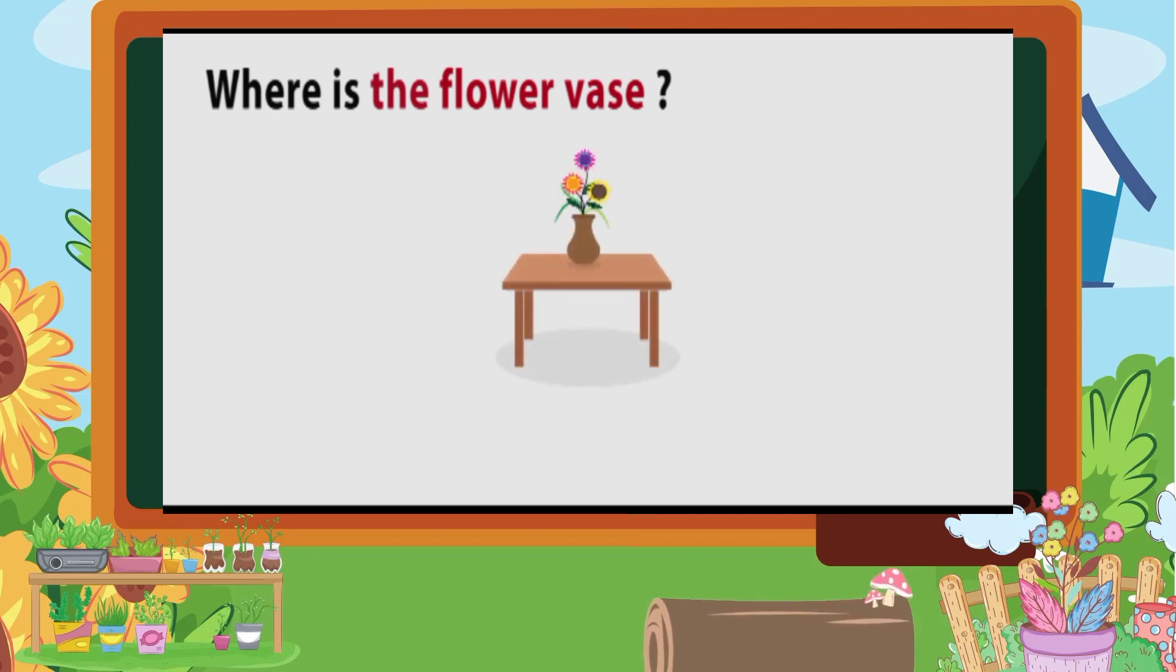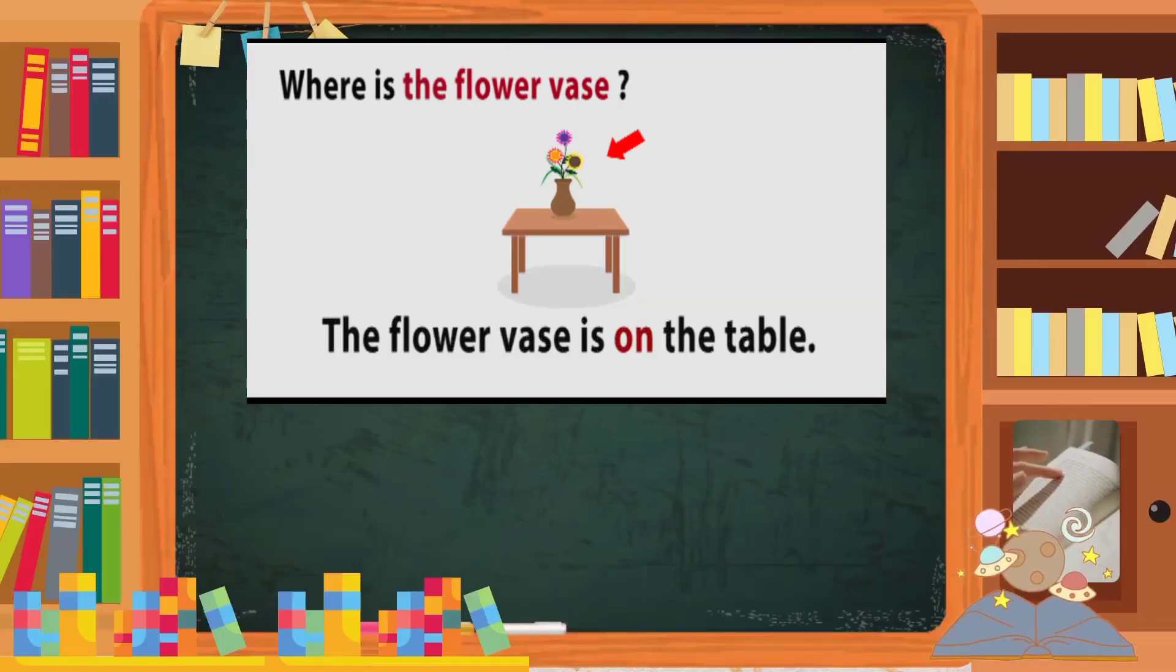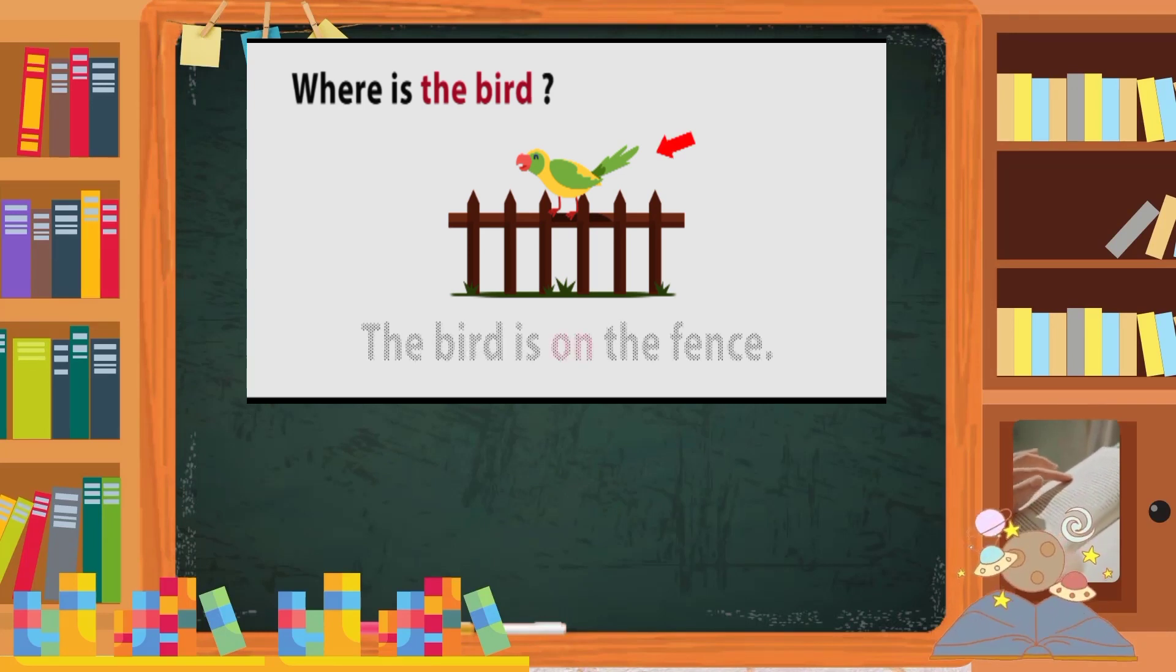Where is the flower vase? The flower vase is on the table. Where is the bird? The bird is on the fence.